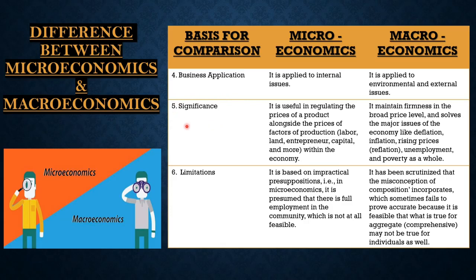The fifth base for comparison is significance. In microeconomics, it is useful in regulating the prices of a product alongside the prices of factors of production — that are labor, land, entrepreneur, capital, and many more — within the economy.